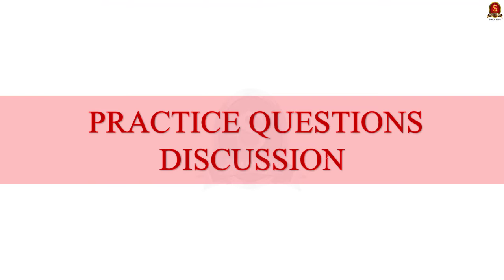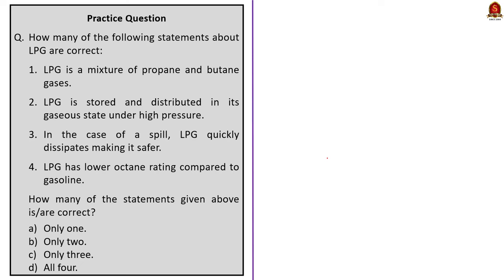Now we have come to the prelims practice question discussion. Question 1: How many of the following statements about LPG are correct? Statement 1 — LPG is a mixture of propane and butane gases: Correct. Statement 2 — LPG is stored and distributed in its gaseous state under high pressure: Incorrect — LPG is stored and distributed in its liquid form under moderate pressure. Statement 3 — In case of a spill, LPG quickly dissipates making it safer: Incorrect — LPG does not dissipate quickly because it is heavier than air, making it unsafe. Statement 4 — LPG has a lower octane rating compared to gasoline: Incorrect — LPG has a higher octane rating compared to gasoline. So only the first statement is correct. The correct answer is option A.